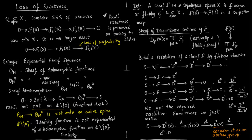So what we have done essentially is: you have taken a sheaf F and made a complex out of it — a flabby resolution. And that is the important takeaway.